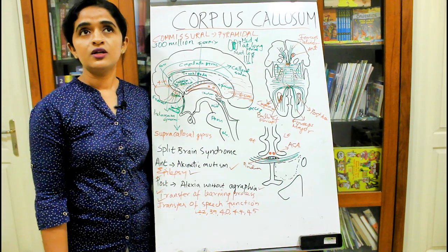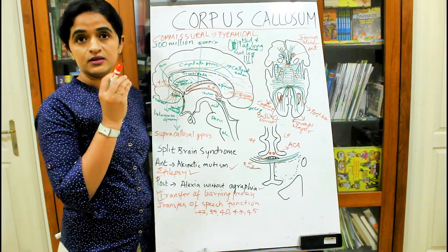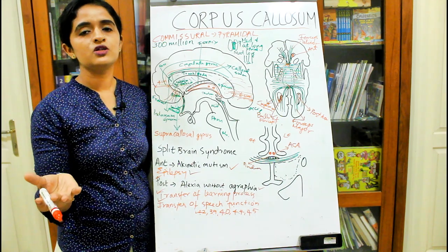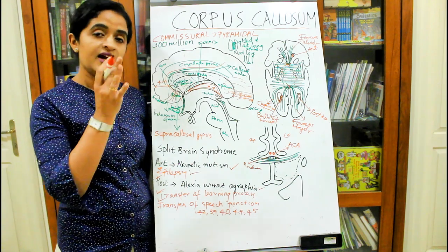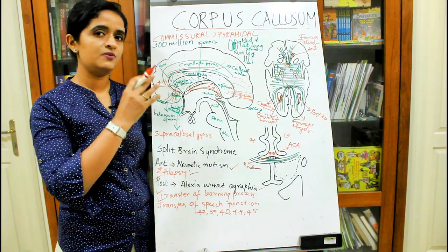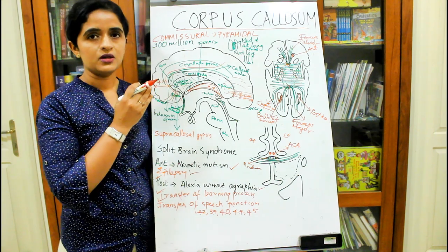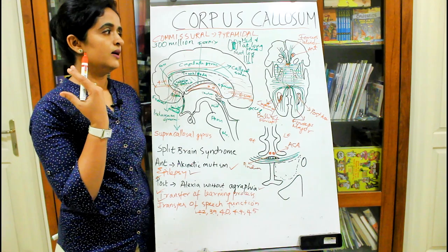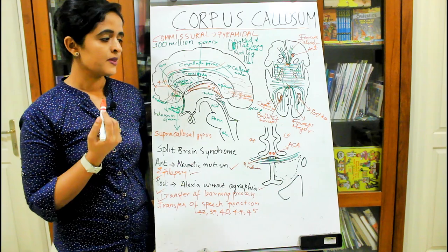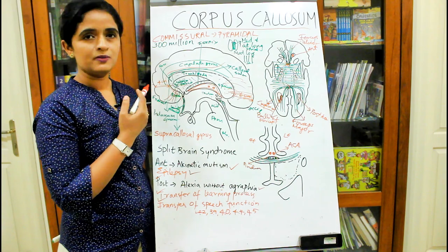In cases of severe epileptic seizures, surgeons used to divide the corpus callosum so that the epileptic focus would not be transferred to the opposite cerebral hemisphere and would be confined to one hemisphere. To prevent transfer of the epileptic seizure focus, sectioning of the corpus callosum is considered a therapeutic method. These are the applied aspects of the corpus callosum.